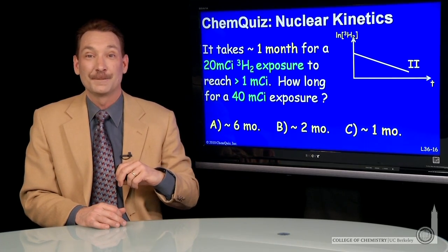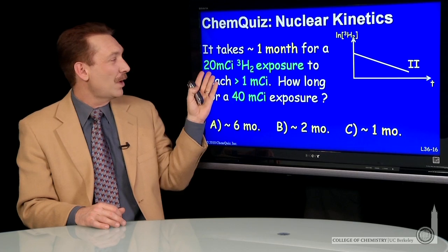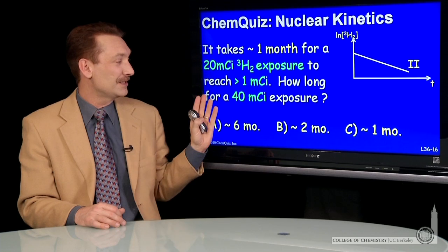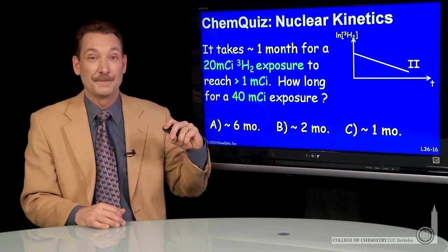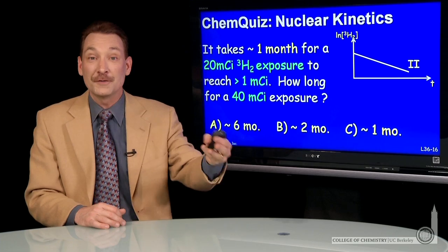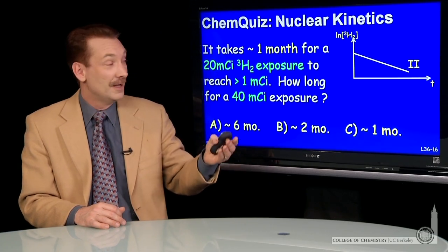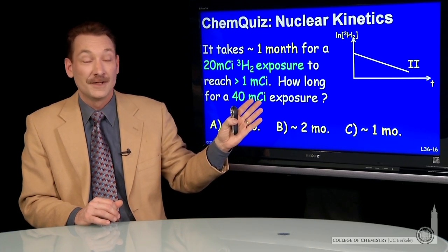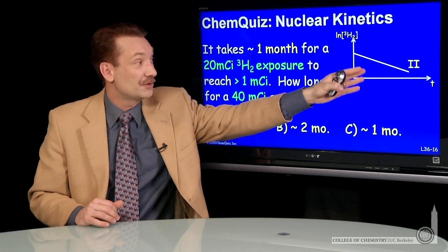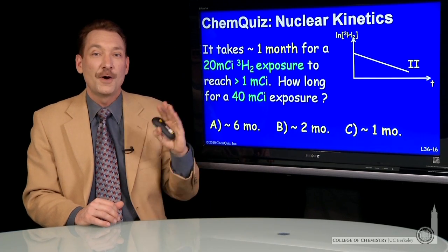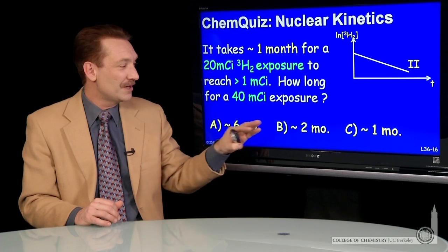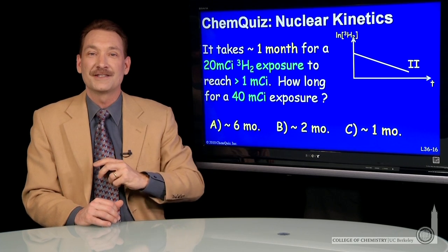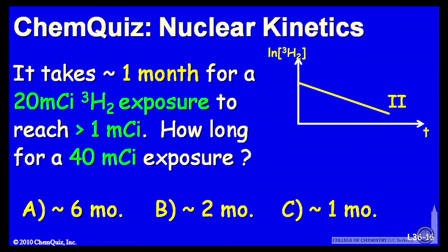Let's look at radioactive decay in terms of kinetics. If it takes about a month for a 20 millicurie exposure to tritium to decay to less than a millicurie, how long does it take for a 40 millicurie exposure to decay? Millicurie is just a measure of the amount of tritium — like a concentration. If you plot the natural log of tritium concentration versus time, it decays linearly. Will it take about six months, two months, or one month for a 40 millicurie exposure to decay to less than one millicurie? Think about that and make a selection.